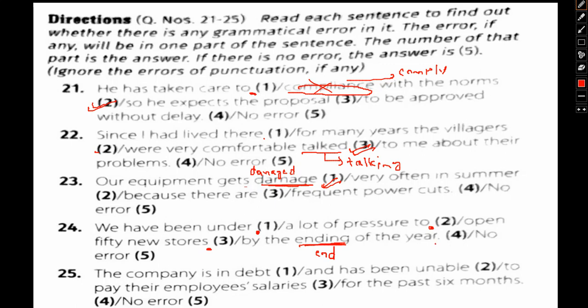By the ending of the year—it won't be ending, it will be end of the year. So option 4 is where we see the error. Now last, question 25: The company is in debt (1) and has been unable (2) to pay their employees' salaries (3) for the past six months (4) and no error (5).